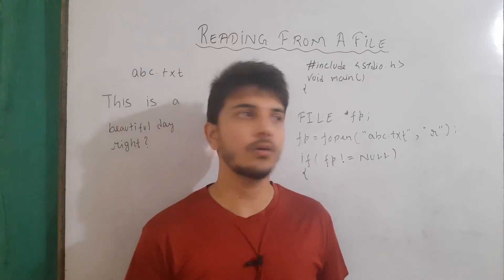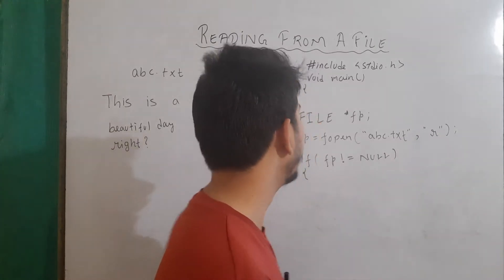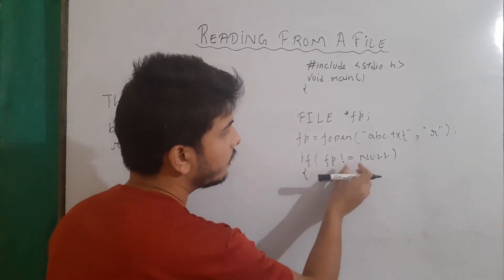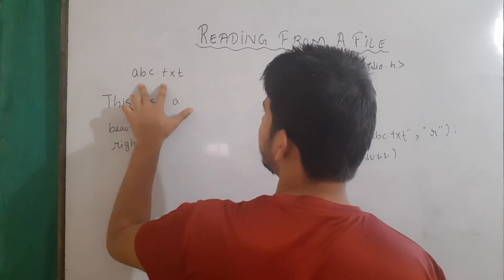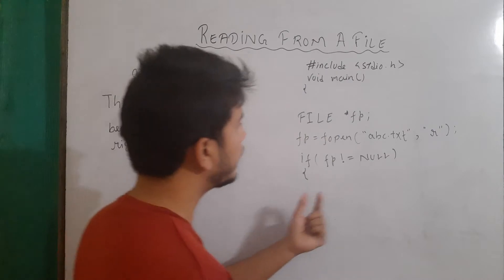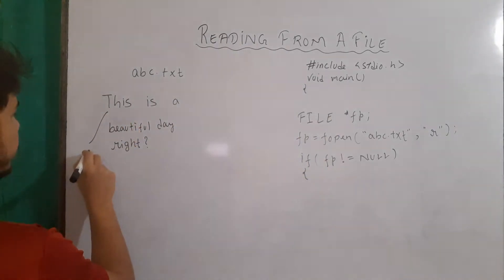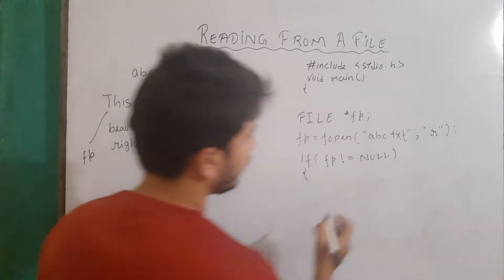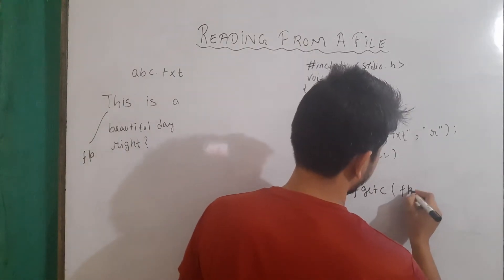Here I had written the code to open our file, that is abc.txt, in the mode of reading, and then to check whether the file pointer is giving null or not. So if the file pointer is not equal to null, that means our file is opened, and the content of abc.txt is written here. To get the character pointed by our fp pointer variable, we use the library function fgetc, and inside it we write fp.